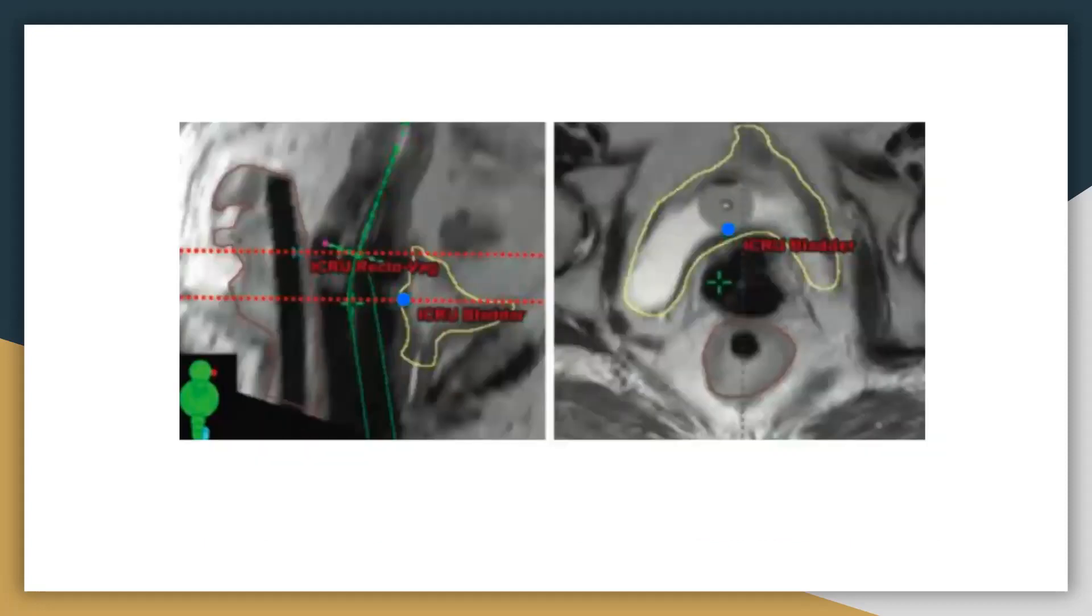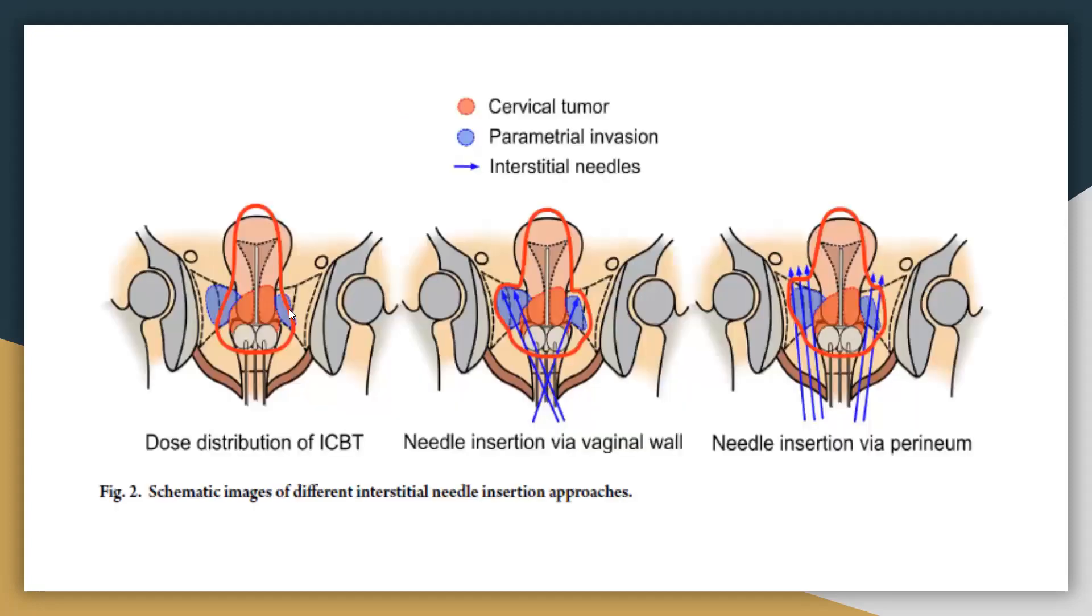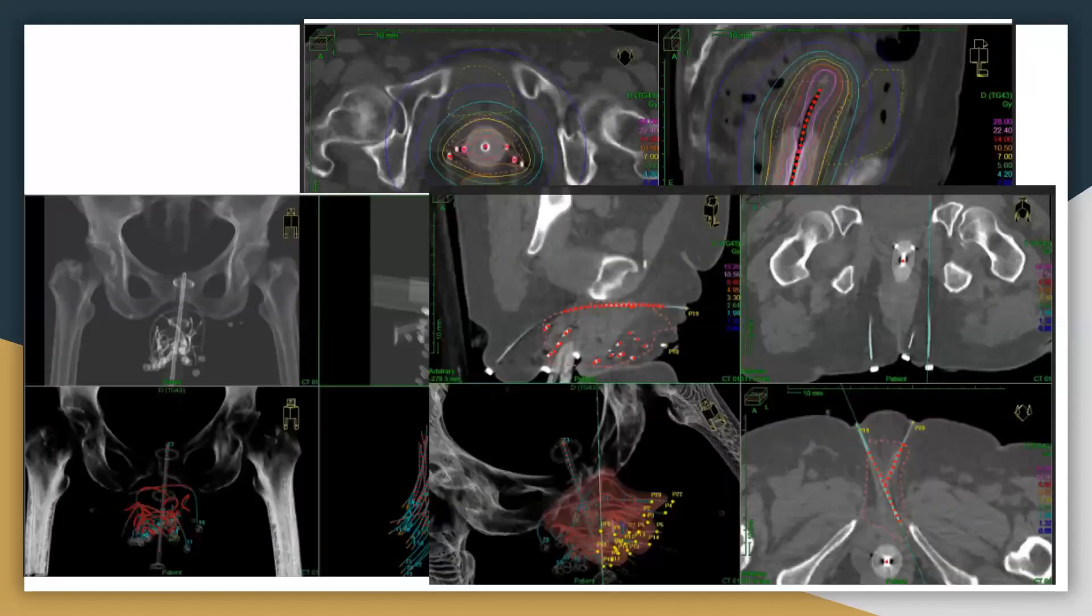This is the way to mark the point on the rectum and the bladder to monitor the dose. This is the dose distribution of tandem and ovoid. If you insert the needles, then of course you can easily modify and optimize your doses according to the volume. There are two ways of inserting the needles. One is the transvaginal via the vaginal wall. The other one is the transperineal via interstitial needles.